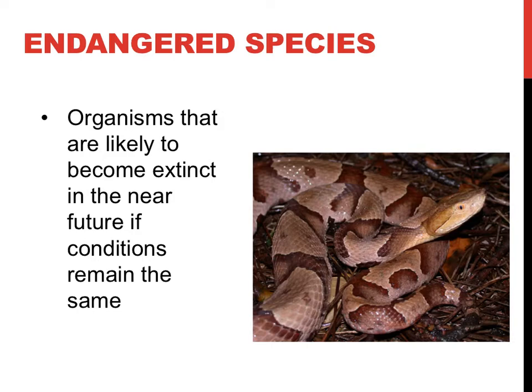Endangered species are another type of threatened species, defined as organisms that are likely to become extinct in the near future if the conditions in their environment do not change. The copperhead snake is an example of an endangered species found in Iowa. Destruction of rocky wooded habitats that serve as summer feeding grounds, excessive removal of snakes by collectors, and mortality at the hands of snake hunters and the general public imperil the copperhead snake. Its dependence on traditional den sites used for many years, perhaps many generations, makes this species particularly vulnerable to exploitation by humans.